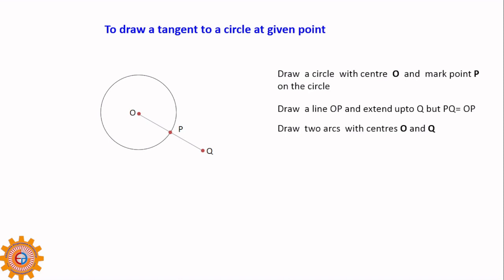Now you have to draw two arcs with centers O and Q — one arc with O, another arc with Q. The intersection point is marked as R. Now you have to draw the line joining P and R. This is the tangent to the given circle at the given point.